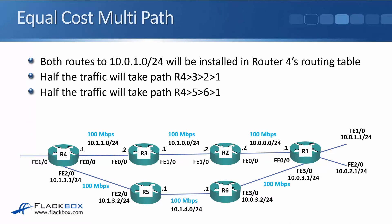Looking at our example here, we have R1 on the right and R4 on the left. The example is going to look at how R4 is going to get to the 10.0.1.0/24 network behind R1. In our example topology, all of the links are the same bandwidth — they're all 100 megabits per second. It has to go through three 100 meg links along the top path, and also three 100 meg links along the bottom path.